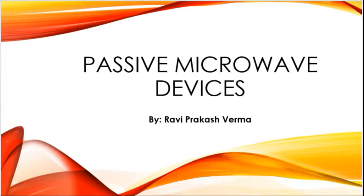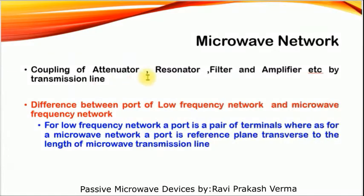Now, what is a microwave network? A microwave network is a combination of various microwave devices such as a source, attenuator, resonator, filter, and amplifier, coupled together by transmission lines or waveguides for the desired transmission of microwave signals. There are two types of ports: one for low frequency networks and another for microwave frequency networks.